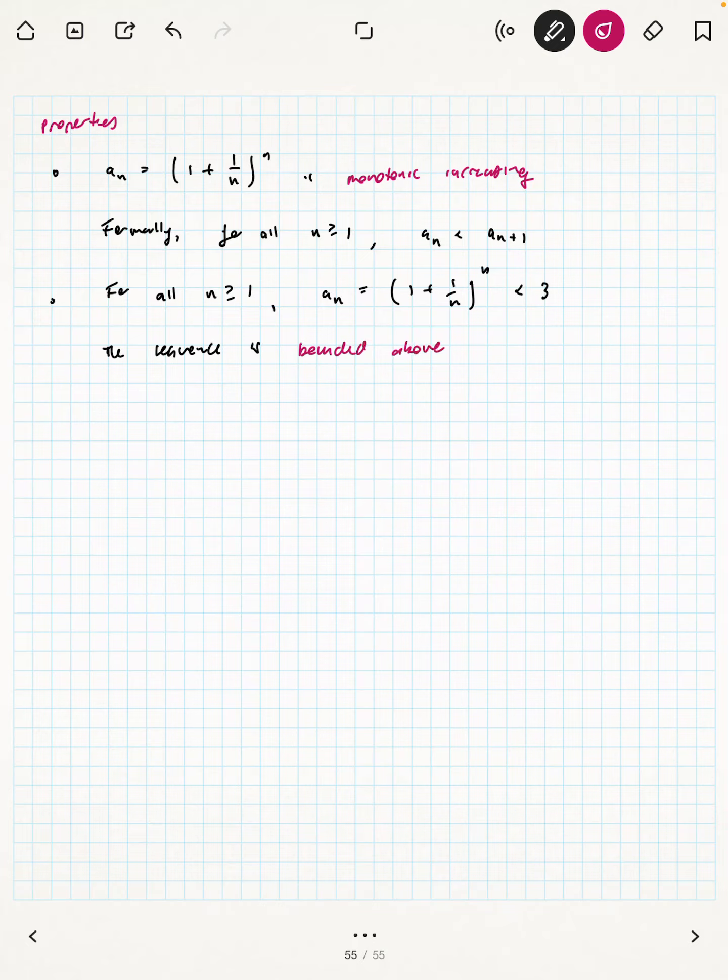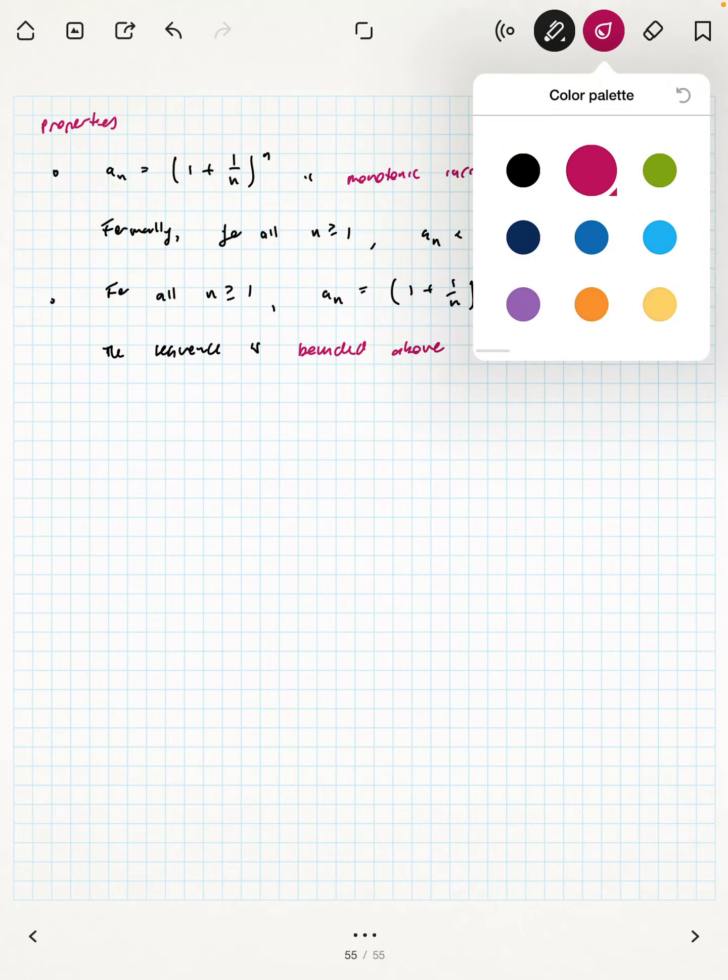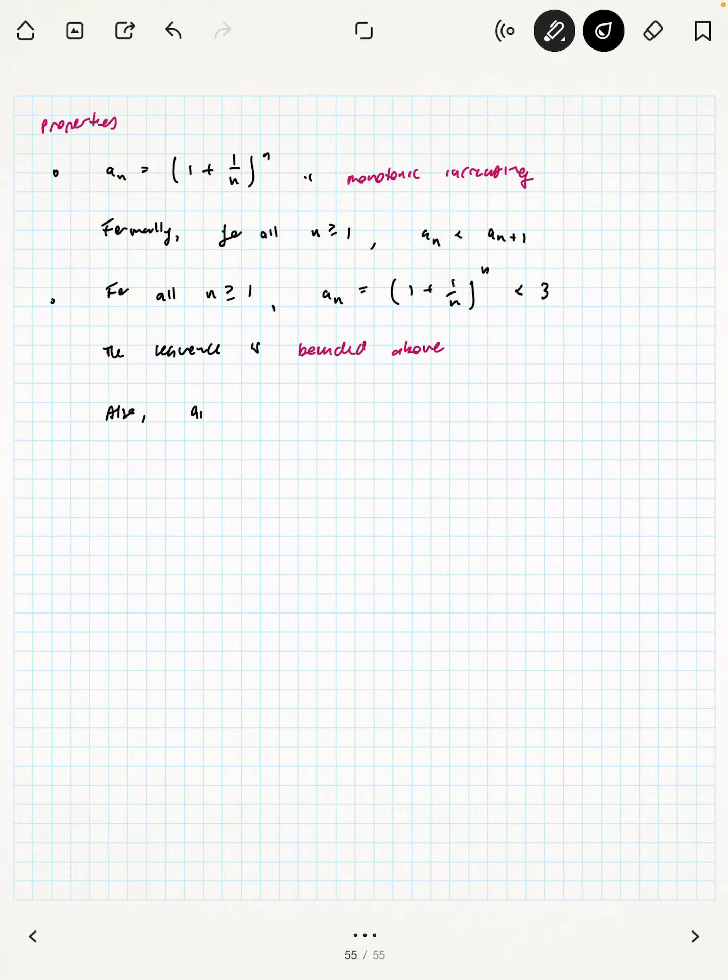There is another definition called bounded below, which is a property of a sequence that has a lower limit, a value for which it does not get lower than. In this case, we know the lower bound for this sequence is 2 as well. Also, a_n is bounded below by 2. All the values are going to be between 2 and 3.